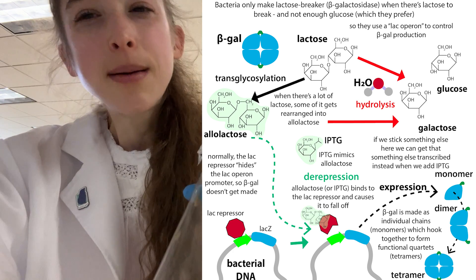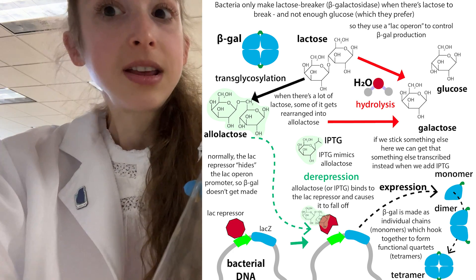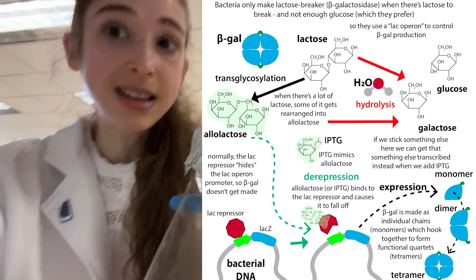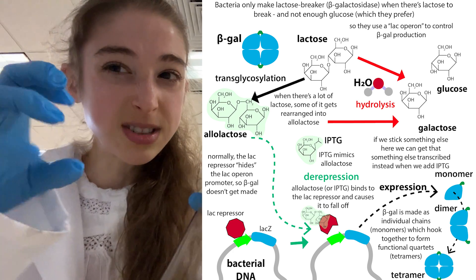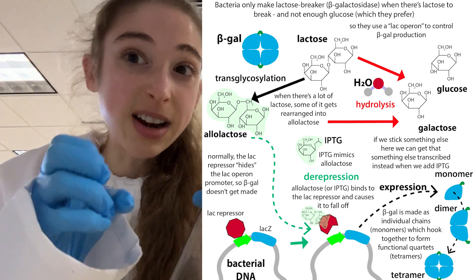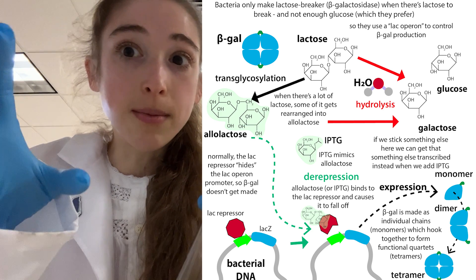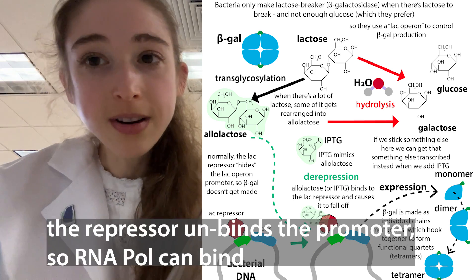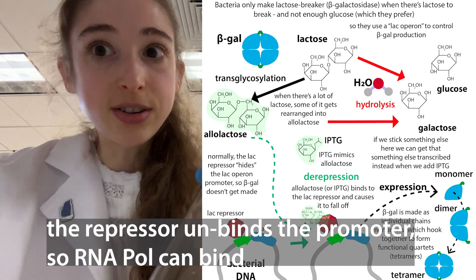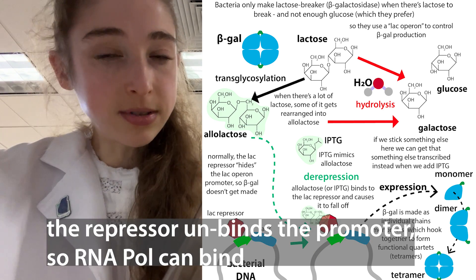In front of the lac operon, controlling the whole thing, there's a promoter and a repressor. Bottom line: when there's lactose around, molecules unbind from the repressor and bind to the promoter, and then the bacteria start making the proteins for lactose breakdown.